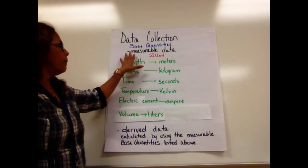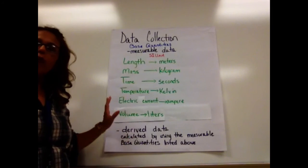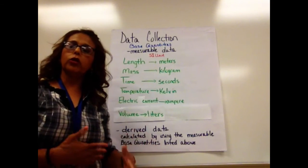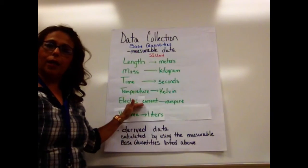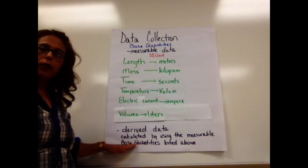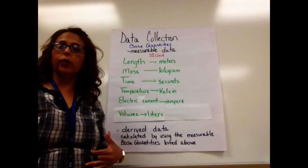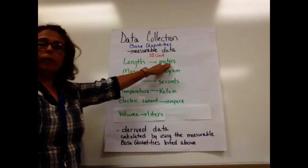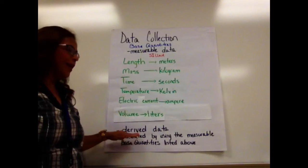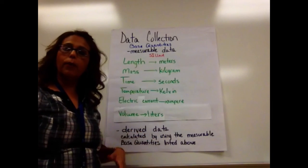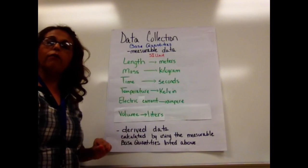When we talk about our base quantities — things we can literally measure — we're looking at these components. From there, everything else we measure, such as velocity, speed, acceleration, gravity's pull, and force, is a combination of these base units. That's where we get derived data. These are calculated by using the measurable base quantities. For example, speed is length divided by the time it takes to travel that length. We combine those two in a formula, do some math, and we end up with a derived number and derived units. That concludes our basic idea of data collection and our base quantities of measurable data.